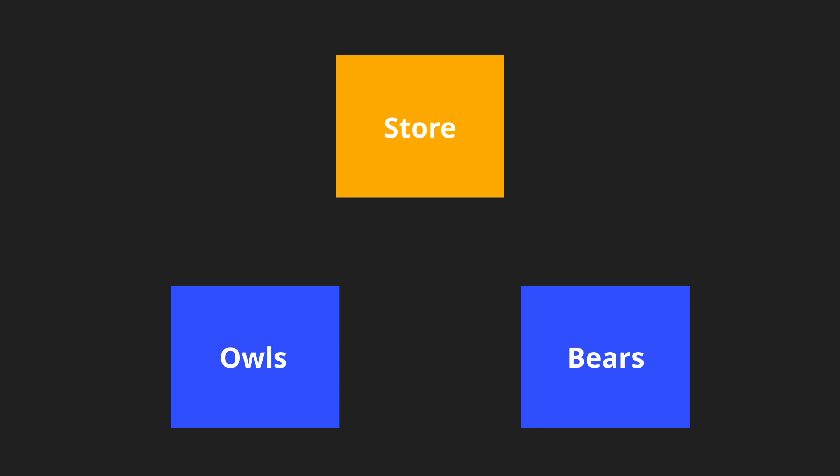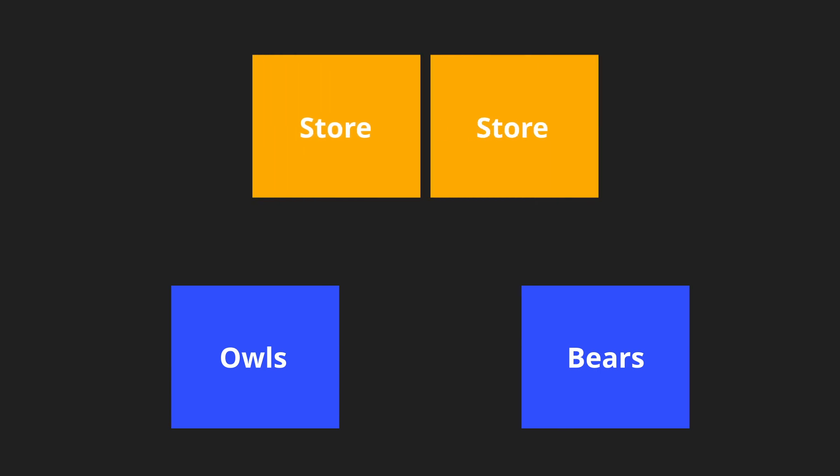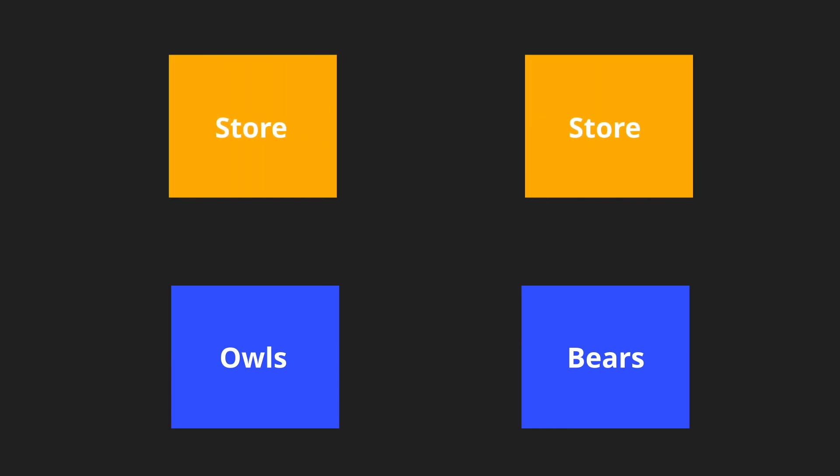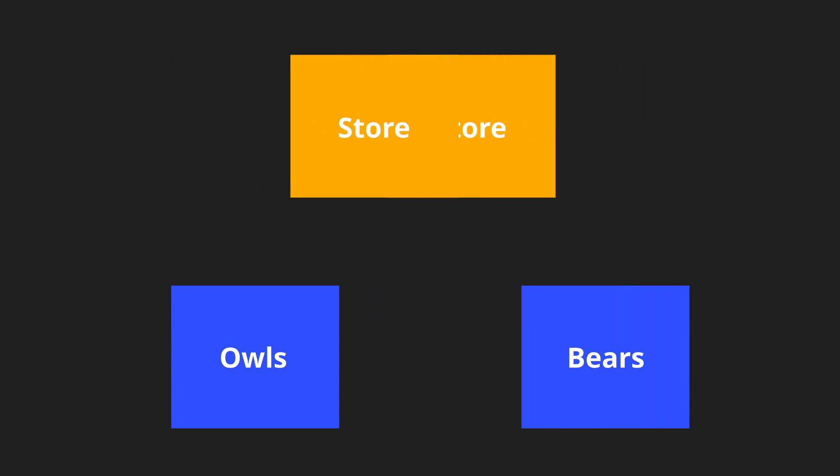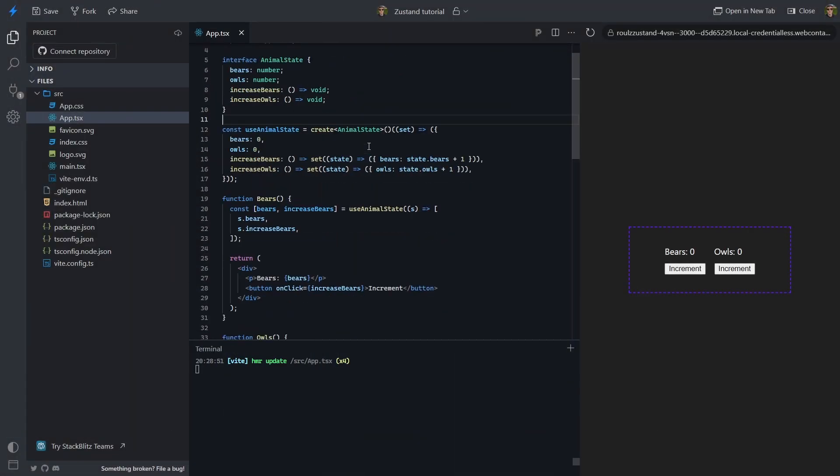How can we prevent this? The most logical solution would be to separate both of them into their own individual store, but this might not always be possible. There might be a very good reason for both of them to be interconnected and some functions might need to consume both. But there's another way.